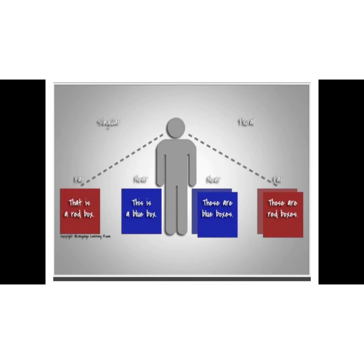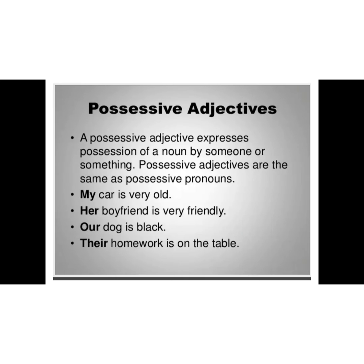Let us understand demonstrative adjectives with the help of this picture. This is used to show or indicate a noun that is near to the speaker and singular in nature. That is used to indicate a noun that is far from the speaker but singular in nature. Similarly, these is used to indicate nouns that are near to the speaker but plural in nature, and those is used to show nouns that are far from the speaker but plural in nature.